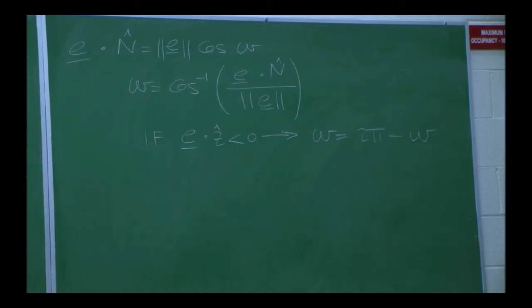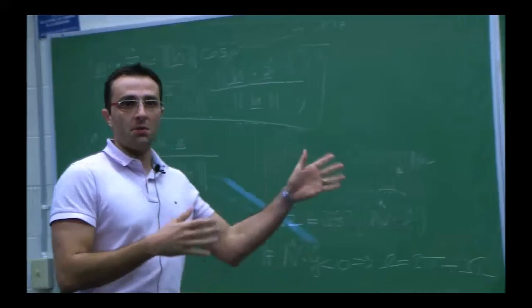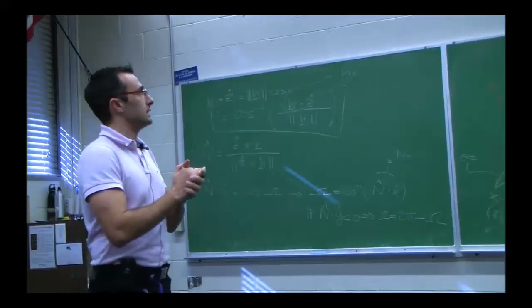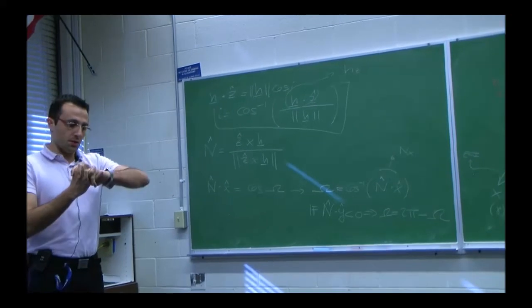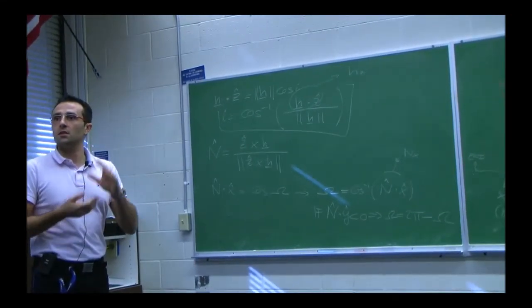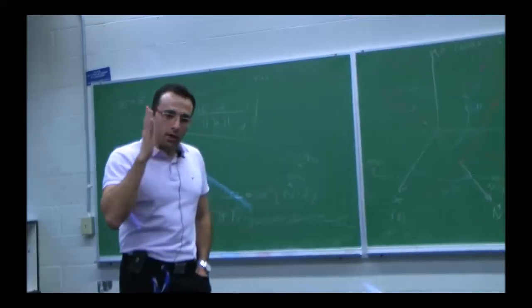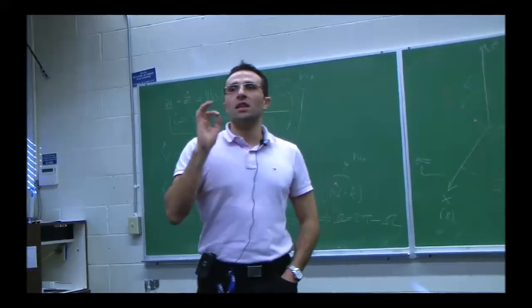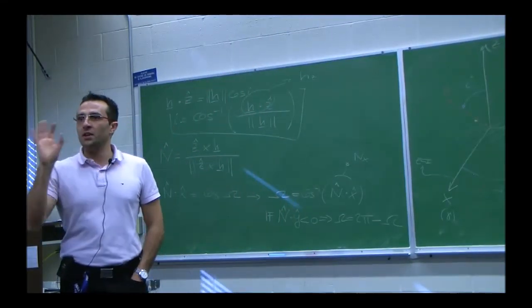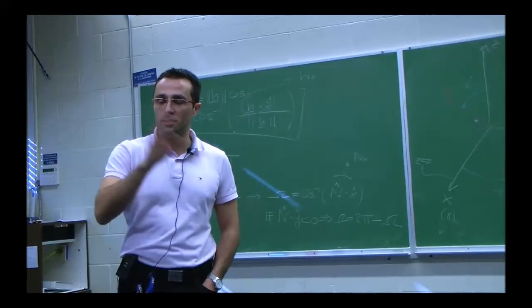That is how you go from the state vector to orbital parameters. The reverse process — going from orbital parameters to state vector — will involve dealing with this sequence of Euler angles in more detail, using rotation matrices. We'll be formal about Euler angles next time. It's a lot more entertaining.